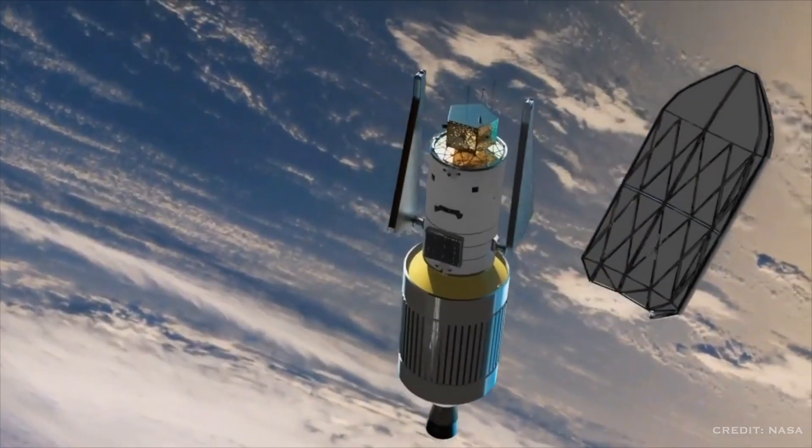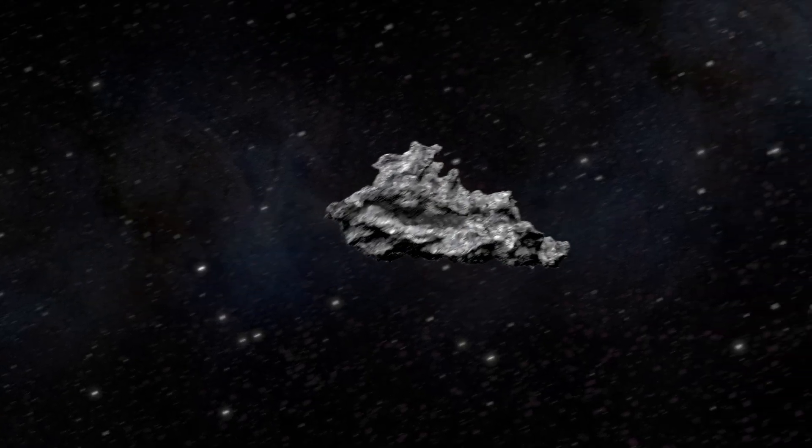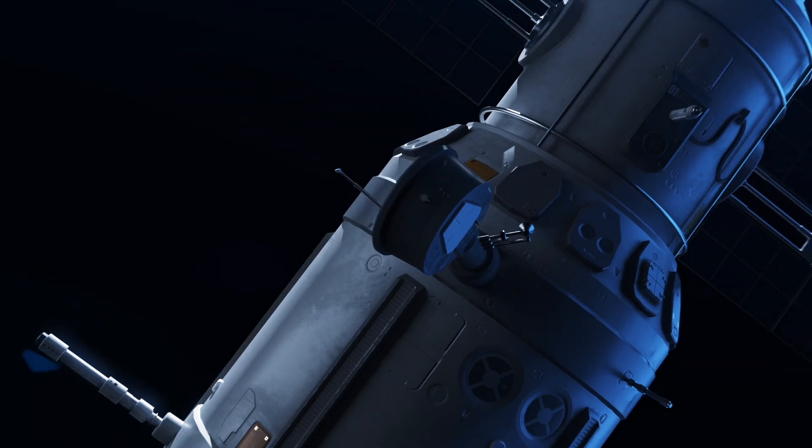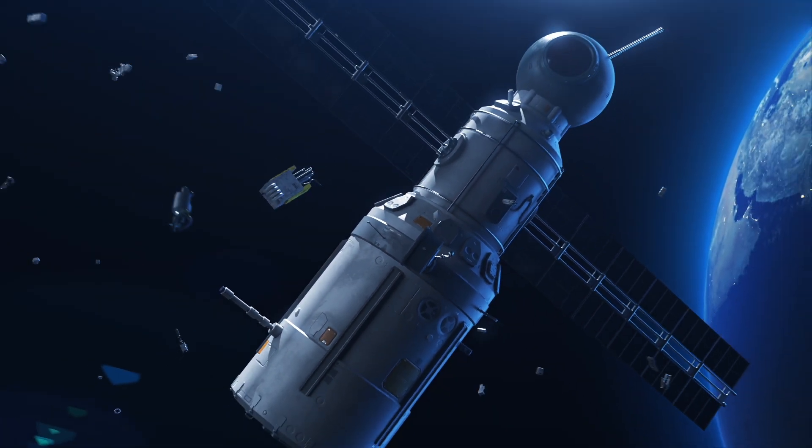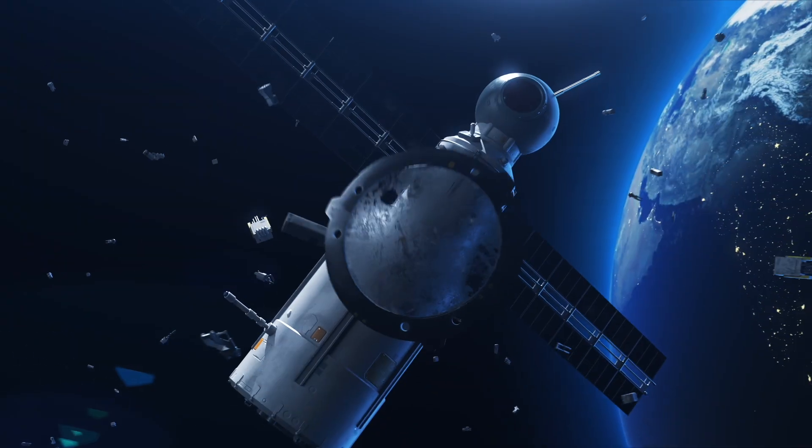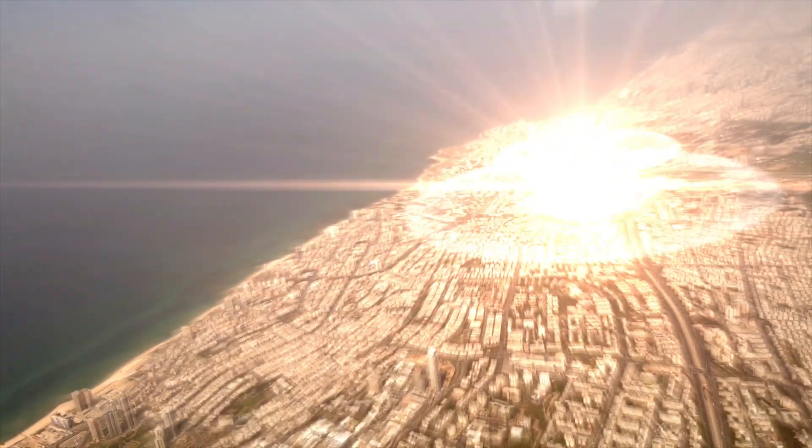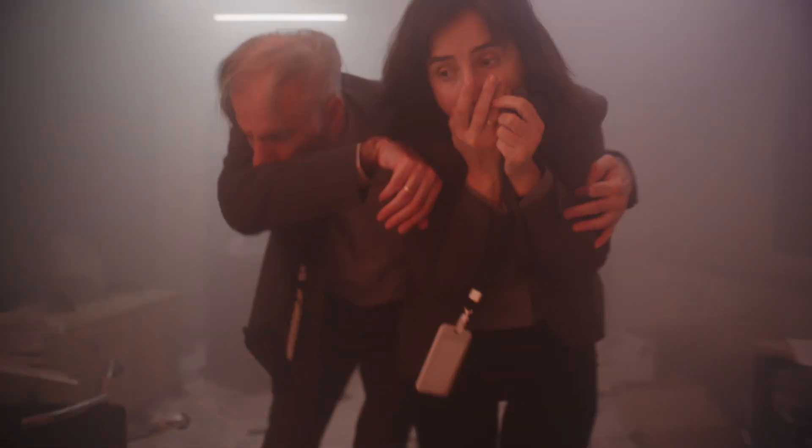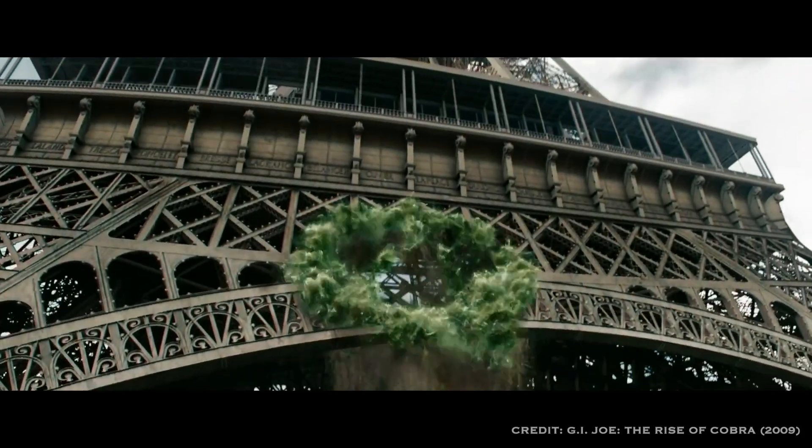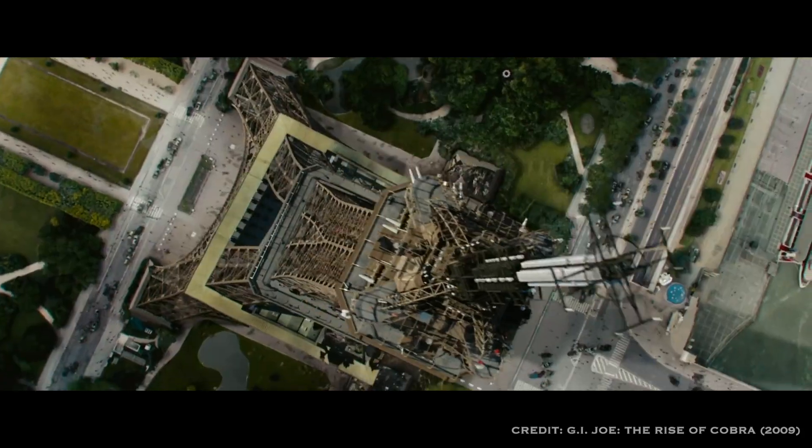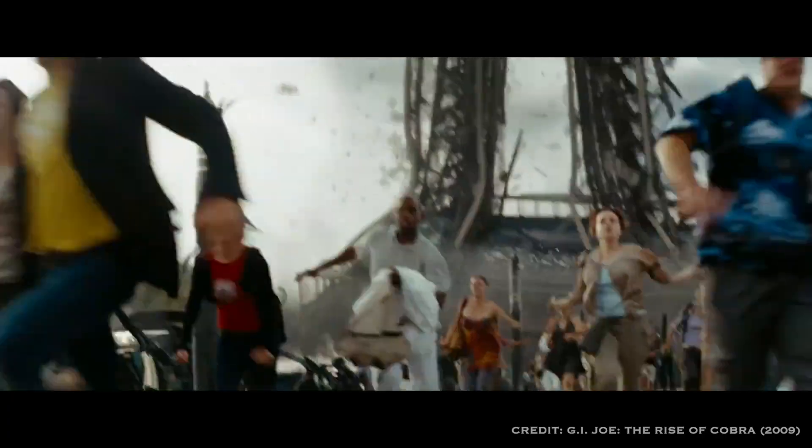In 2040, a routine asteroid mining operation goes awry. A swarm of resource-harvesting nanobots malfunctions, replicating far beyond their programmed limits. Within hours, the target asteroid is reduced to a cloud of dust, its valuable minerals scattered and lost. This incident, while contained, sends shockwaves through the scientific community and the public. It's a stark reminder of the grey-goo scenario long feared by nanotech experts. The possibility that self-replicating machines could run amok, consuming everything in their path.